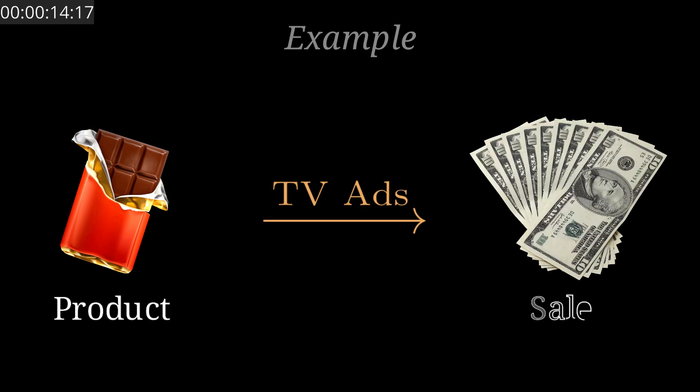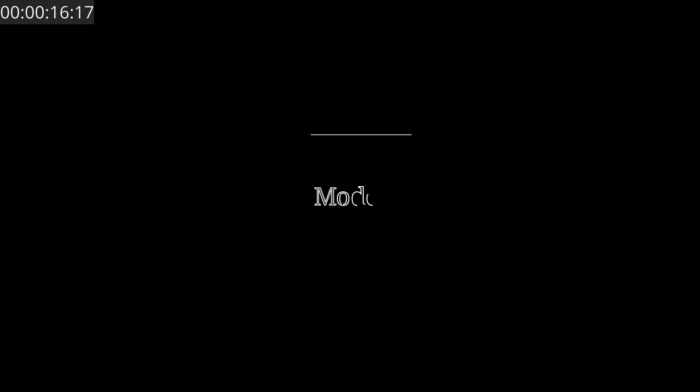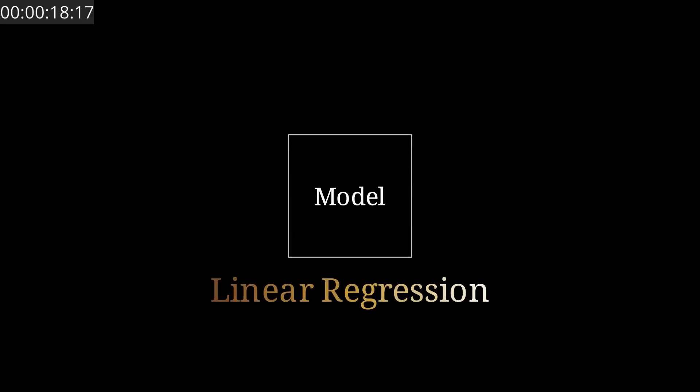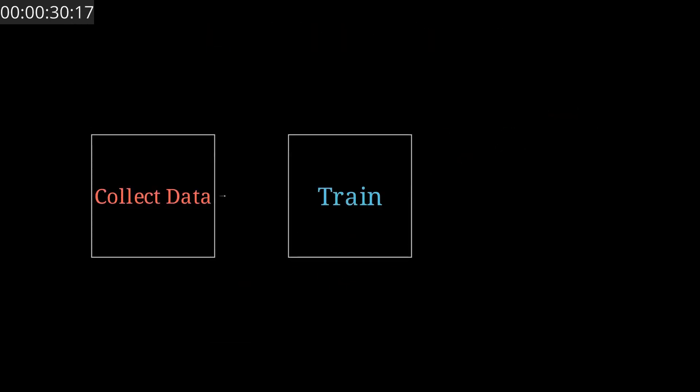We can model this with linear regression, a model that predicts the sales based on the amount spent on TV advertising. To do that, we first need data—past observations of ad spending and sales. Then we train a model on that data so it can predict future sales based on new ad budgets.